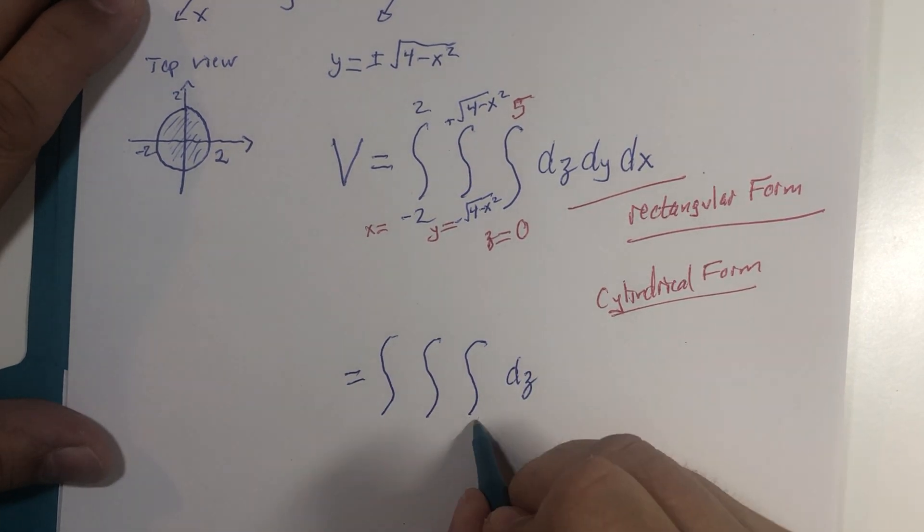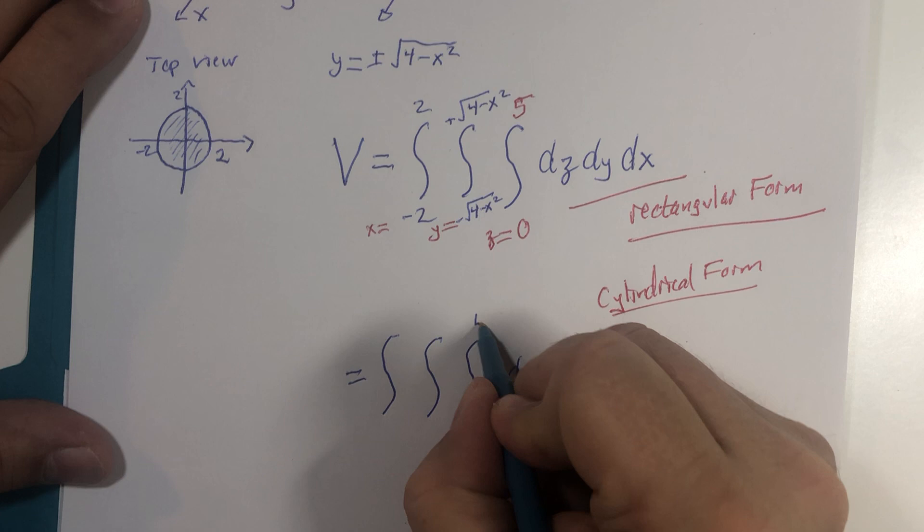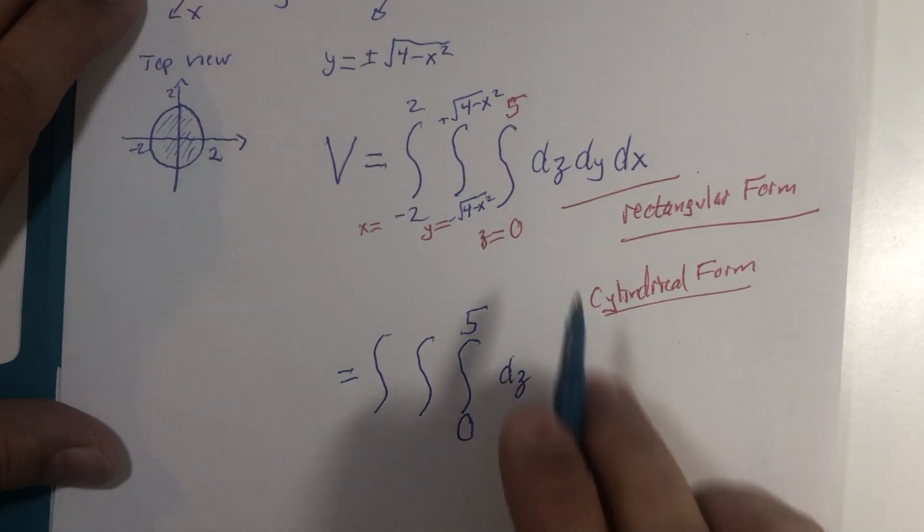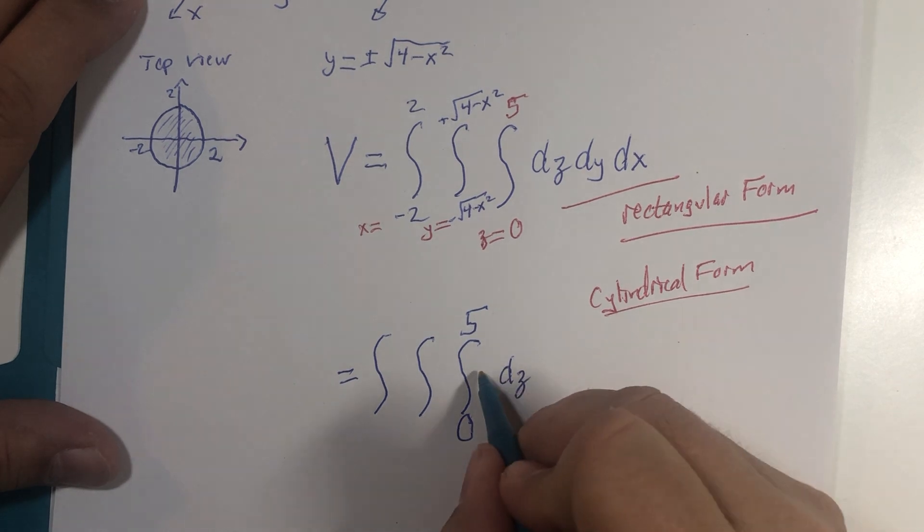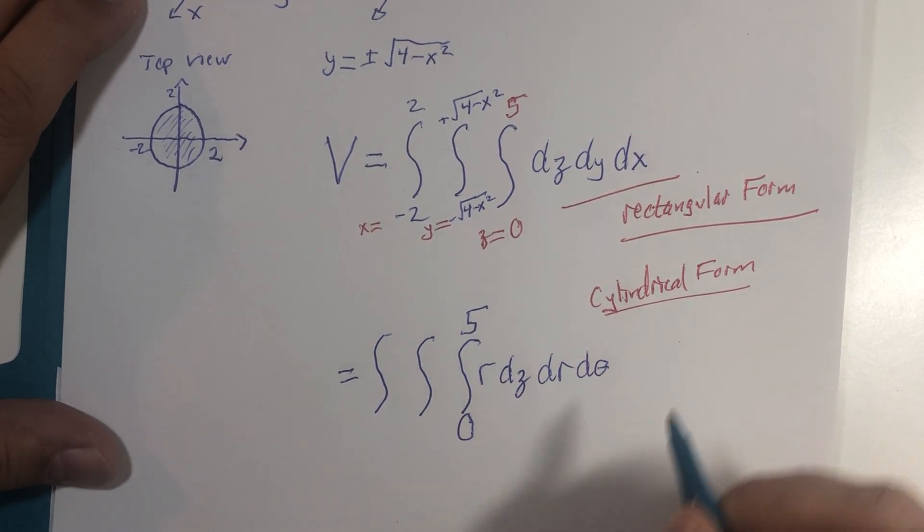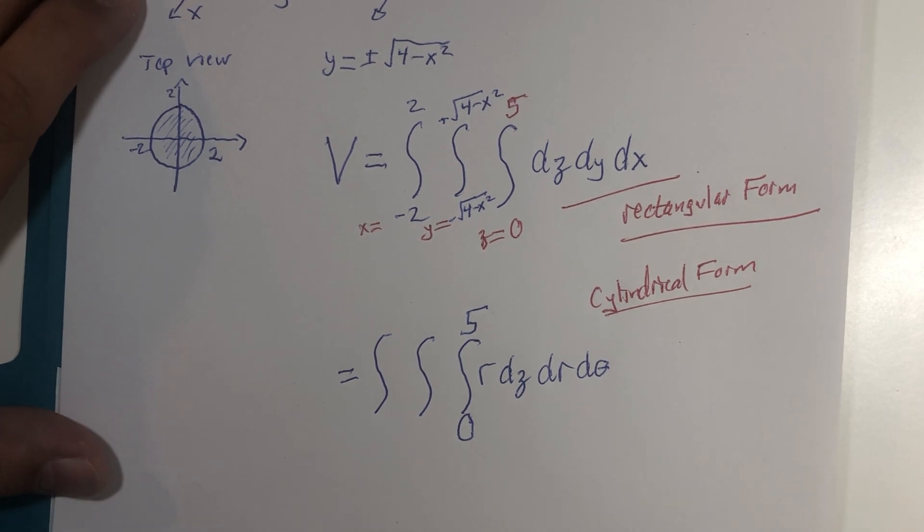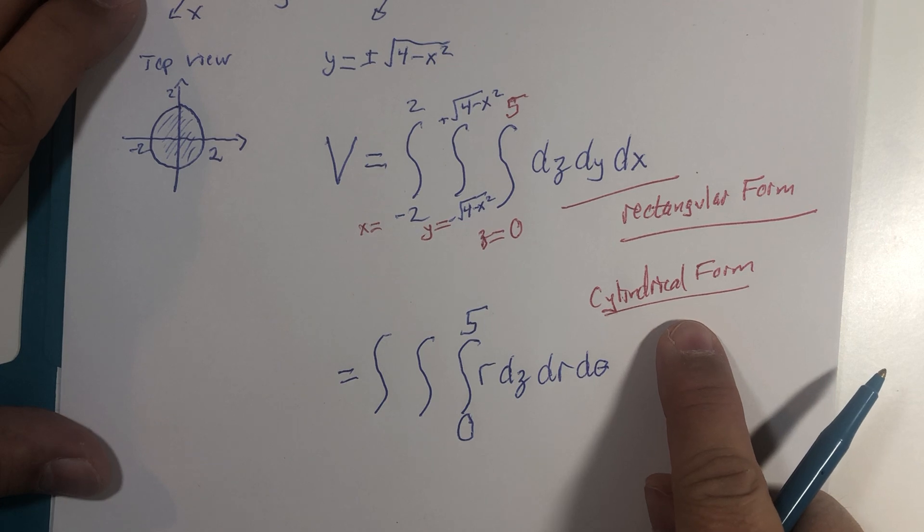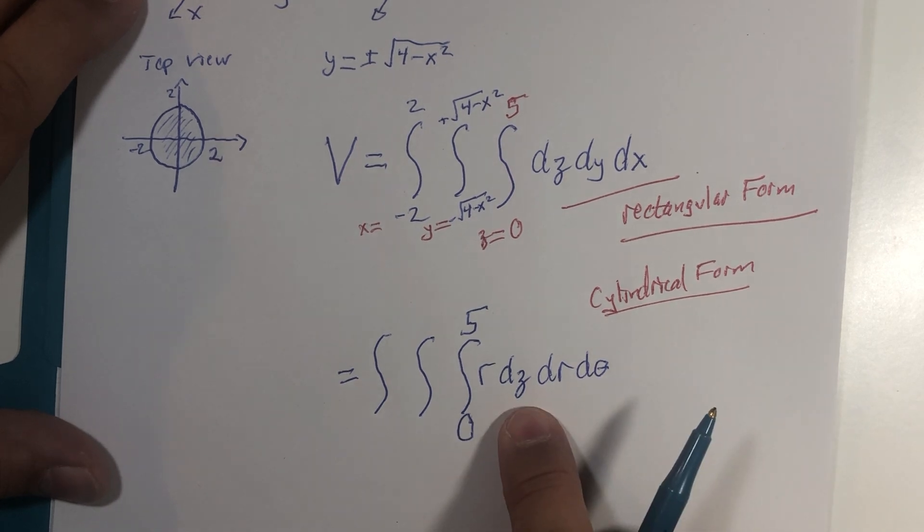And since they are constants, they're still going to be evaluated from zero to five. But dy dx becomes r dr d theta. That's our polar conversion of that double integral. And cylindrical coordinates are the x and y are converted to polar and z remains z.